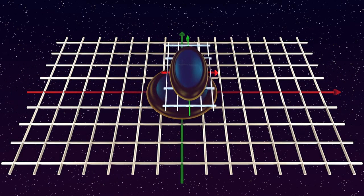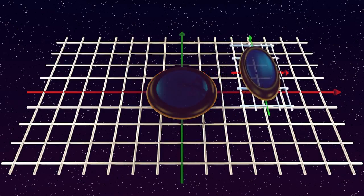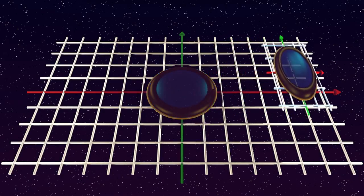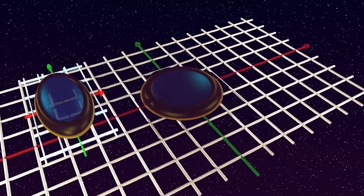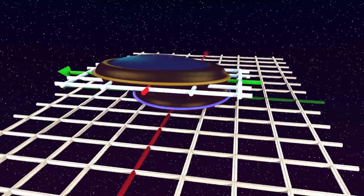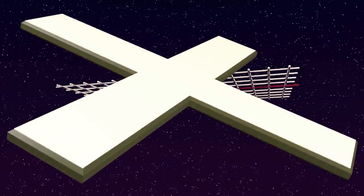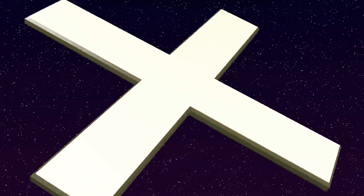Somewhat disconcerting, but simple enough, right? Not really. If the clock flashes are instantaneous or brief enough in their own frames, this simplified picture becomes incorrect and incomplete, because it does not account yet for the third feature of relative motion at relativistic speeds.